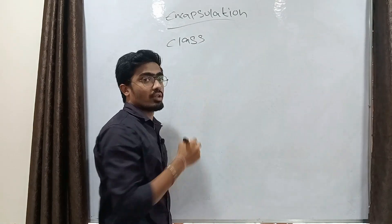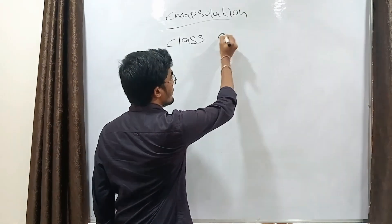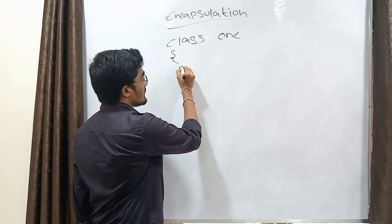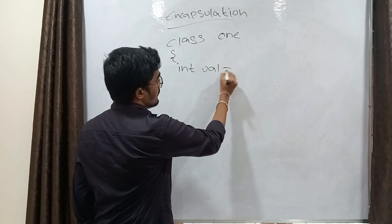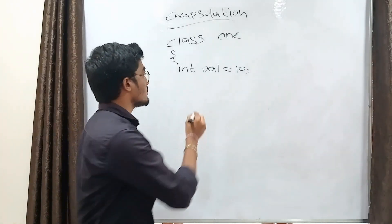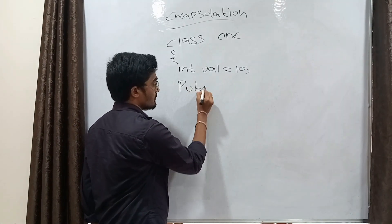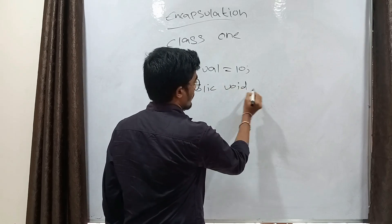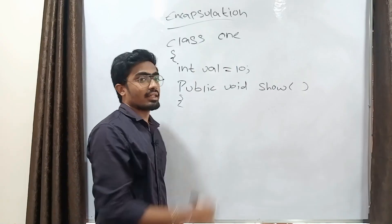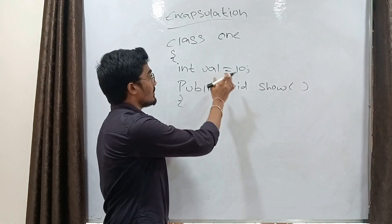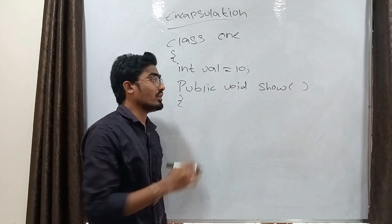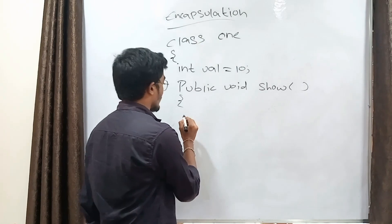Let's see one program. I'm taking one class — let's give it the class name 'One'. Next, I'm declaring one variable: an integer value equal to 10. Then I'm taking one method declared as public. I'm giving the method a name — let's call it 'show' — and using an increment operator to increment this value.